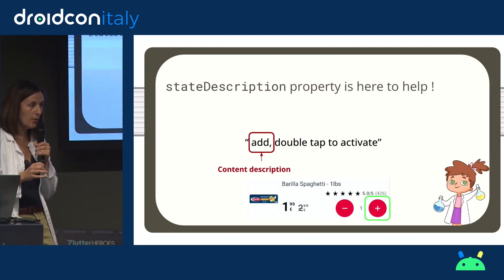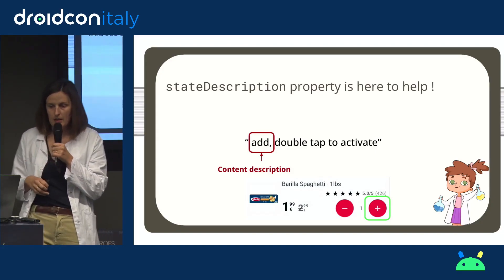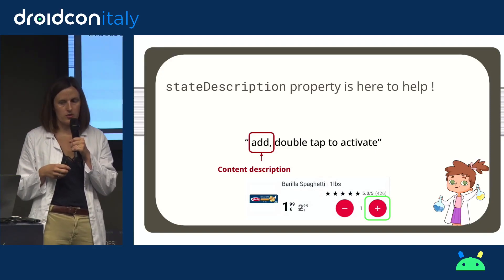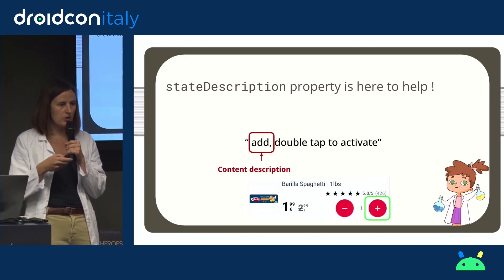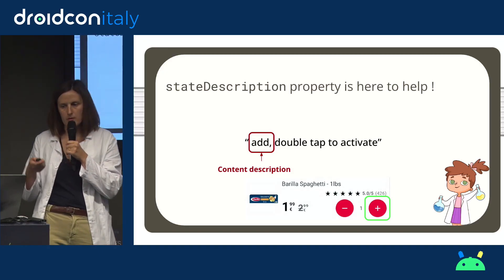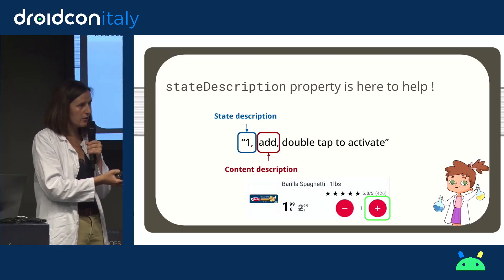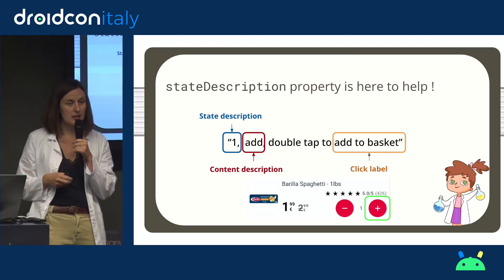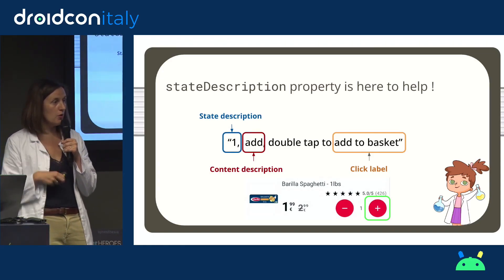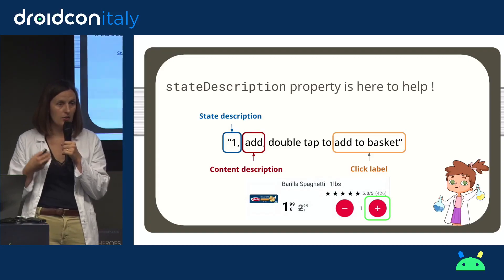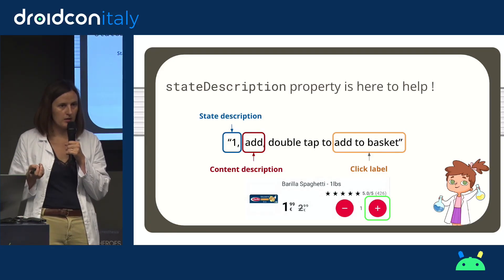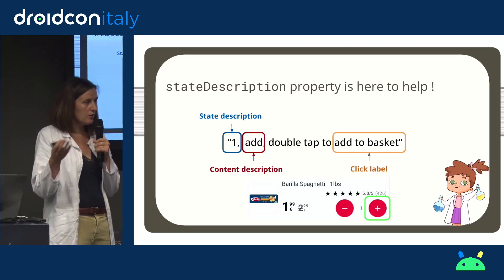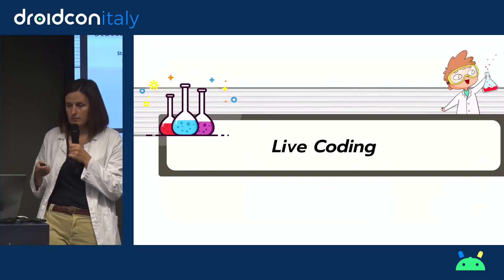To implement this we use a new property called stateDescription. When TalkBack reads the add button in its initial state it says 'Add, double tap to activate.' When we add a stateDescription, that information appears at the beginning of the sentence. We can set it to the current quantity — for example, 'one.' One nice feature in Compose is personalizing the action label TalkBack says. Instead of 'double tap to activate,' we can say 'double tap to add to basket,' or even 'double tap to add the Barilla pasta to the basket.'